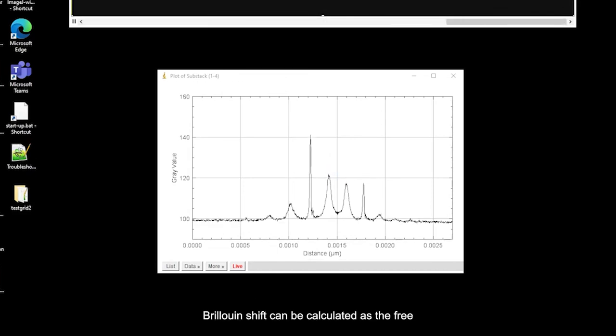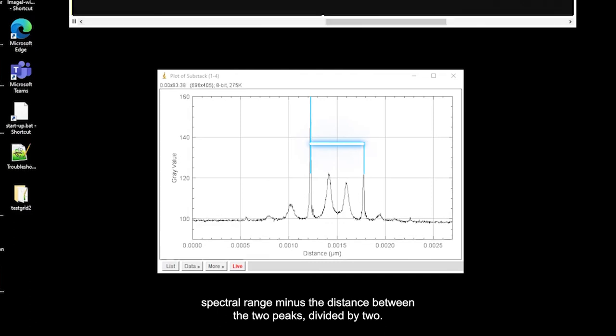Brillouin shift can be calculated as the free spectral range minus the distance between two peaks, divided by two.